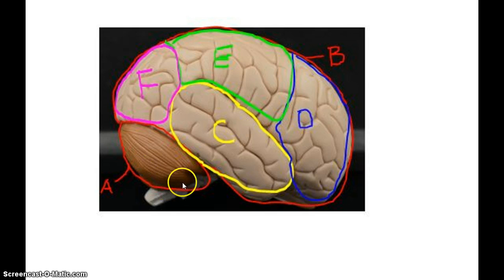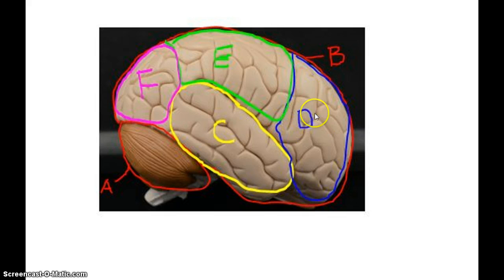Again: the cerebellum. The whole structure here is the cerebrum — frontal lobe, parietal lobe, temporal lobe, occipital lobe.